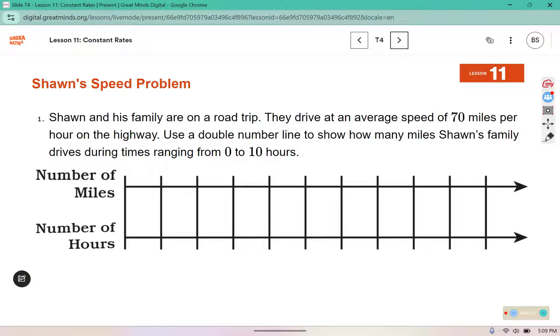Here it says Shawn and his family are on a road trip. They drive at an average speed of 70 miles per hour on the highway. Use the double number line to show how many miles Shawn's family drives during times ranging from 0 to 10 hours. For the miles it says they go 70 miles per hour. So if we count by 70s, we will end up using that same ratio all the way through the double number line.